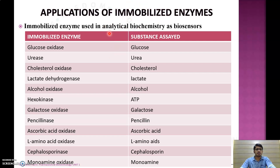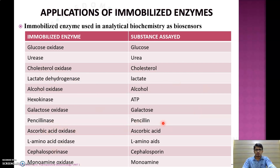Immobilized enzymes can be used in analytical biochemistry as biosensors to qualitatively and quantitatively identify substances in the body. For example, glucose oxidase to assay glucose, urease for urea, cholesterol oxidase for cholesterol, lactate dehydrogenase for lactate, alcohol oxidase for alcohol, and ascorbic acid oxidase for ascorbic acid.